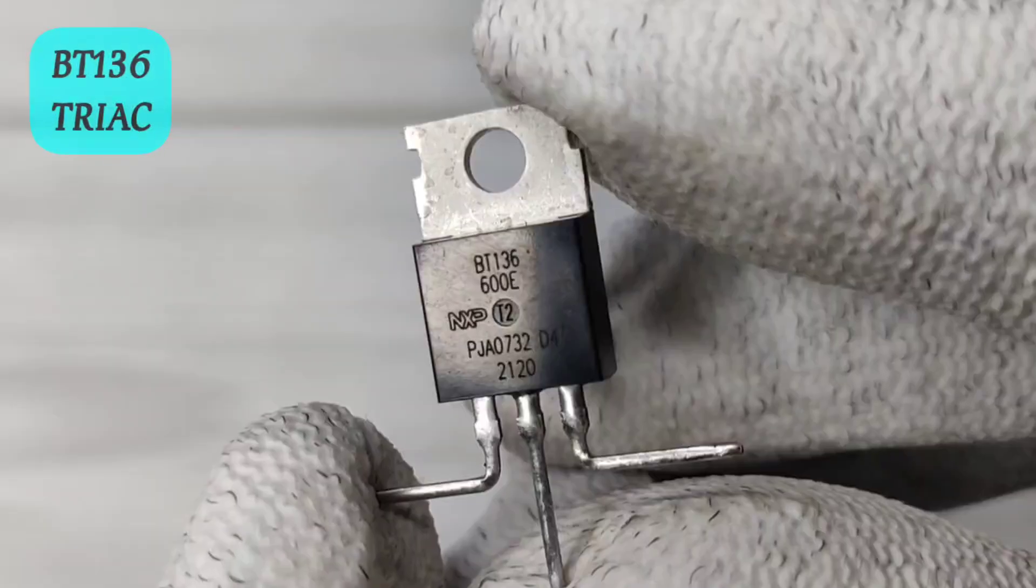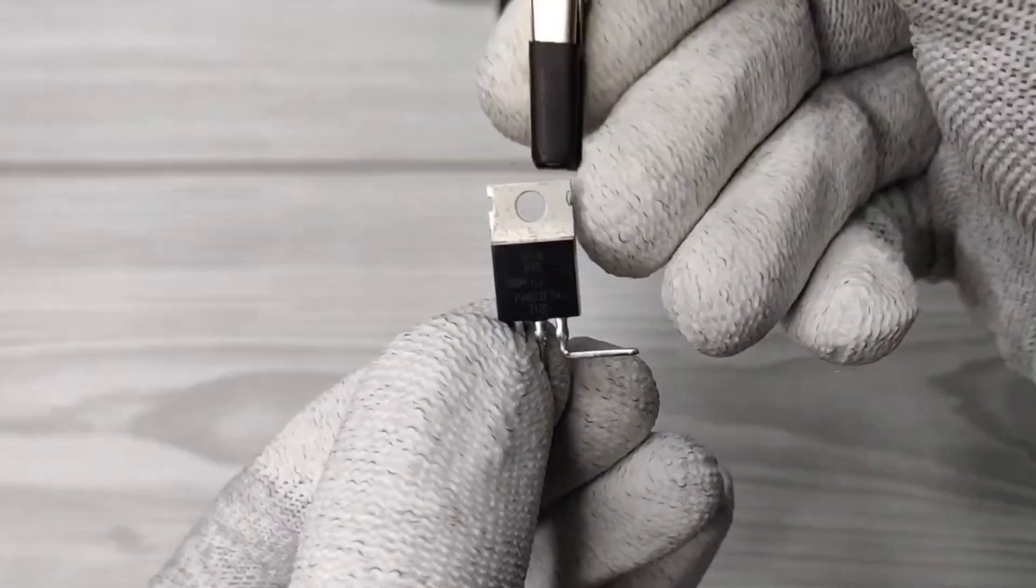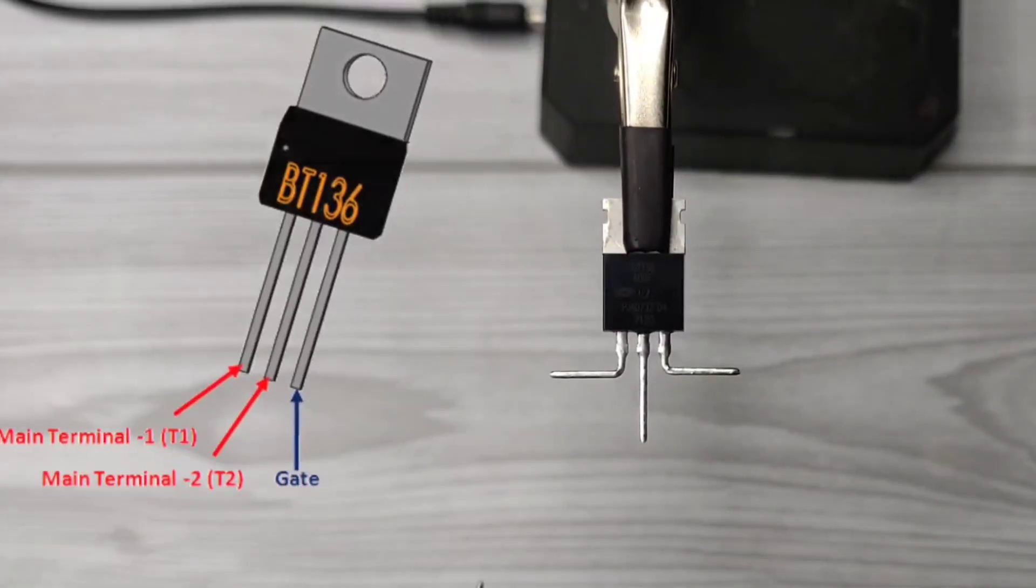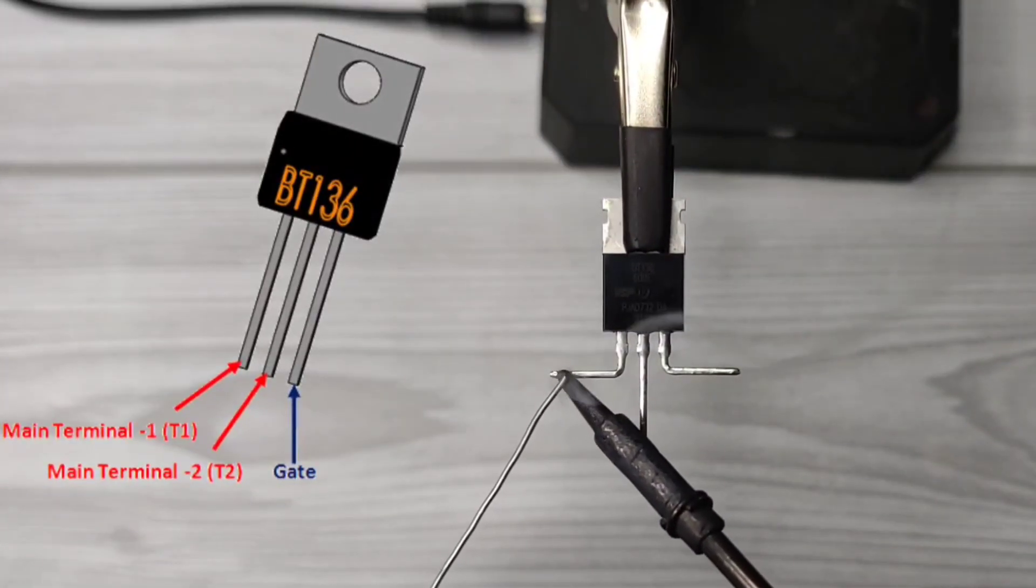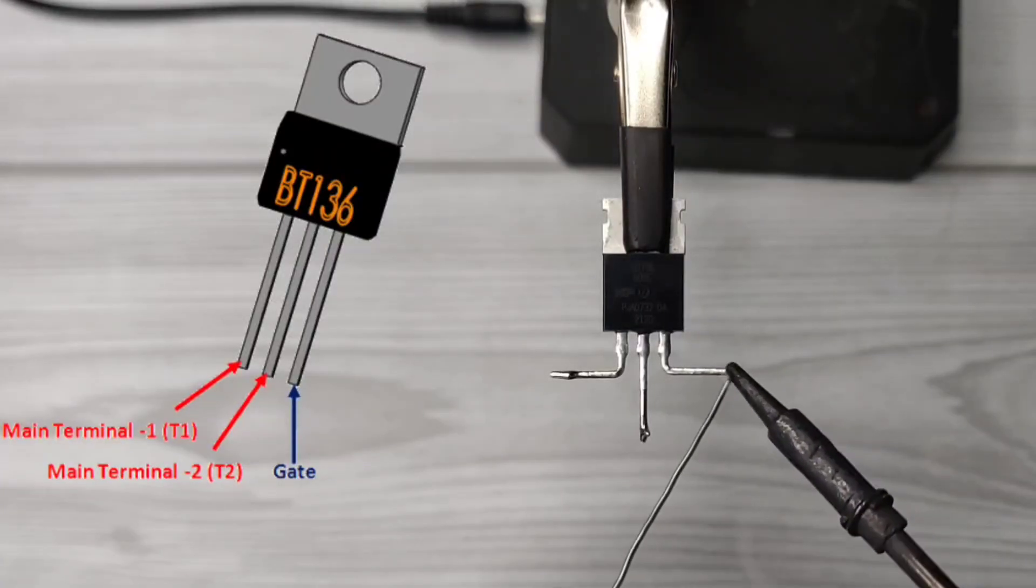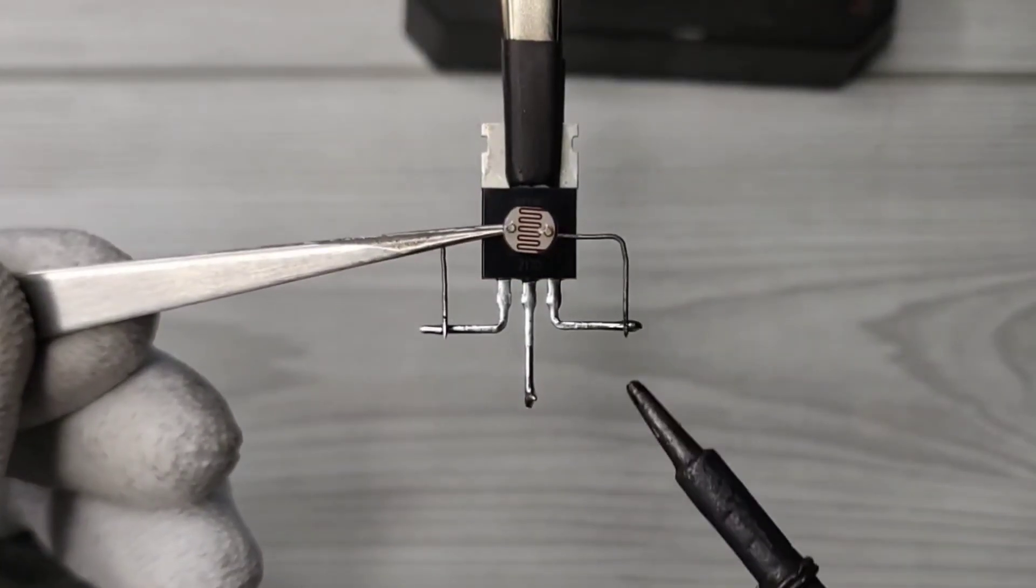You need a BT-136 Triac. Here is the Triac pinout, pre-solder all the pins of Triac. Take a light dependent resistor LDR, solder across pin 3 and pin 1 of Triac.